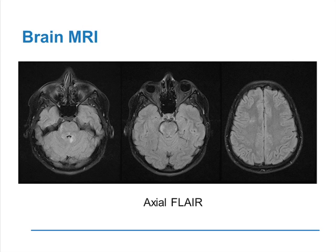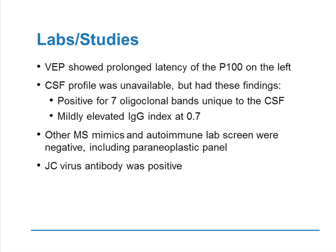Her MRI at the time of presentation demonstrates T2 hyperintense lesions on the pons coming off the fourth ventricle, and a few scattered T2 hyperintense lesions in the subcortical and deep white matter of the brain. Visual evoked potential showed prolonged latency of the P100 on the left. A CSF profile from a prior lumbar puncture demonstrated seven oligoclonal bands unique to the CSF, not found in the corresponding serum, and a mildly elevated IgG index at 0.7. Other MS mimics and autoimmune lab screen had been negative, including a paraneoplastic panel. Of note, the patient was JC virus antibody positive.